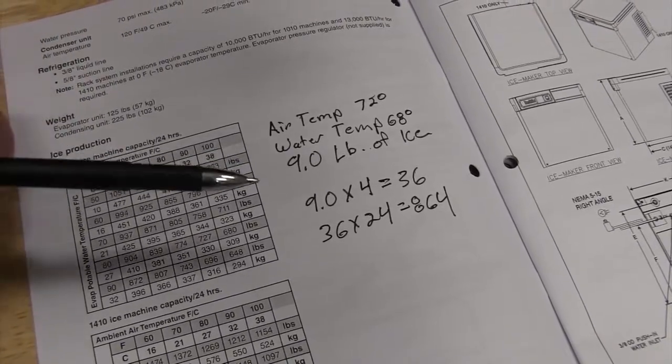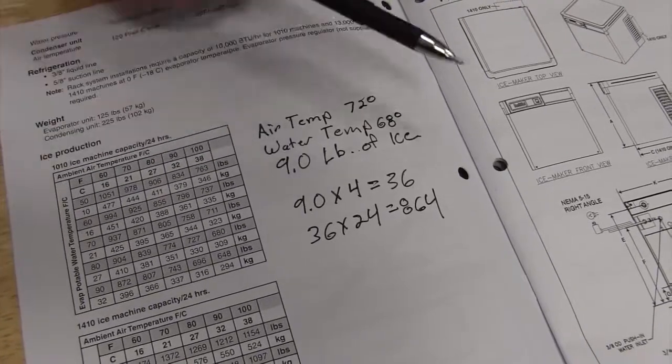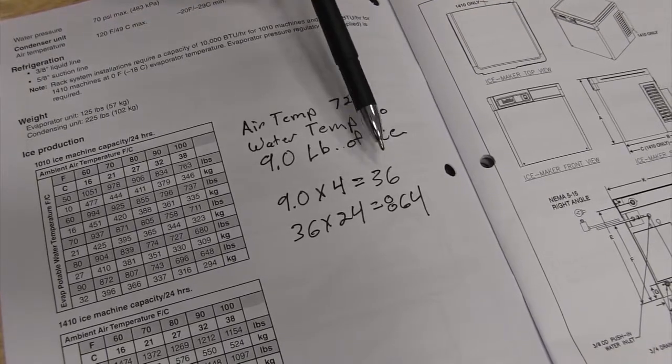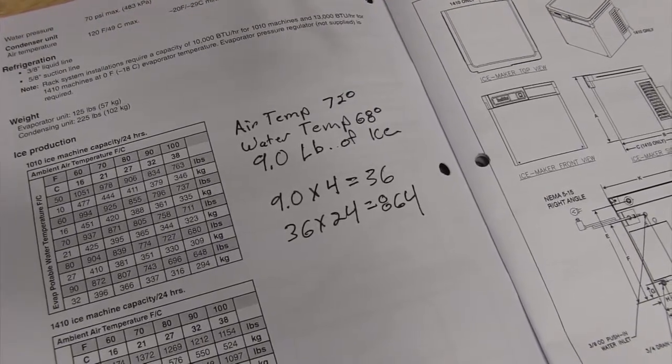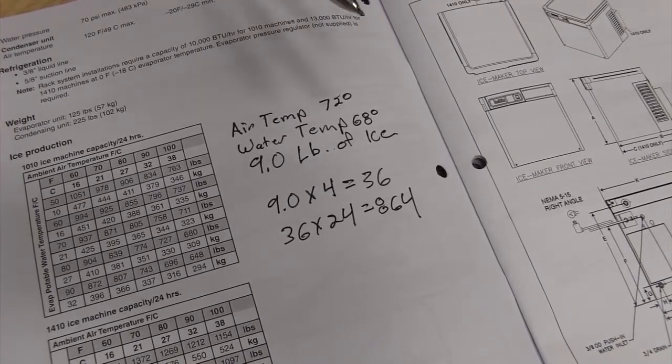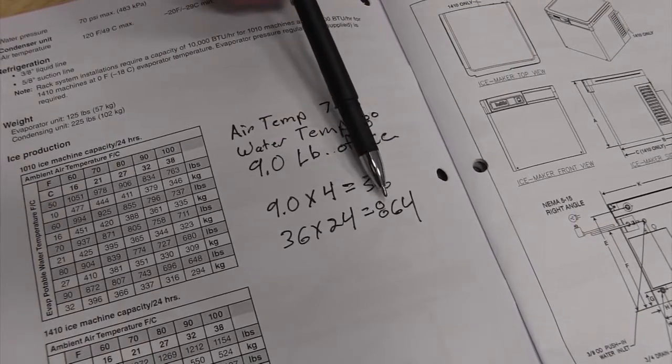So we're going to take our 9 pounds of ice and multiply that by 4. That's going to give us how many pounds per hour, which would be 36. Then we're going to take that 36 and multiply it by 24. That's going to give us how much we're making in a day. In our case, that was 864.